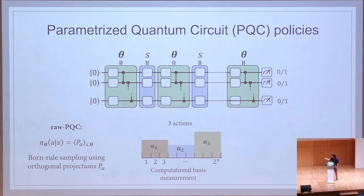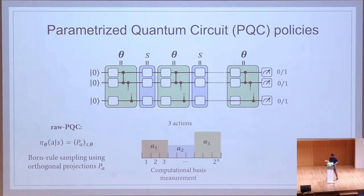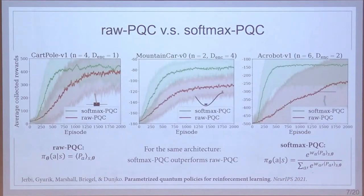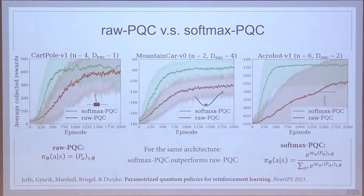One drawback of this raw PQC policy is that it lacks flexibility to make the distribution more peaked independently of the state — which is quite useful in reinforcement learning. One idea is to instead do repeated measurements to evaluate expectation values, multiply them by trainable weights ω, and apply a softmax to renormalize, giving us a softmax PQC policy. The additional trainable parameters allow a more peaked, greedier distribution. Testing both, we find that for the same PQC architecture the softmax PQC outperforms the raw PQC, learning the optimal policy faster.